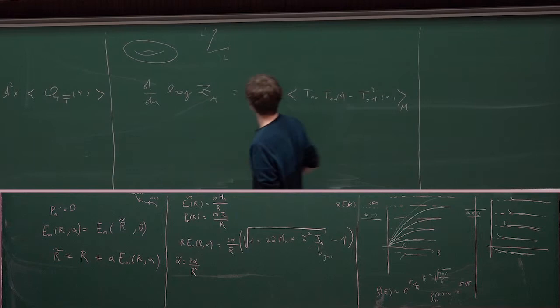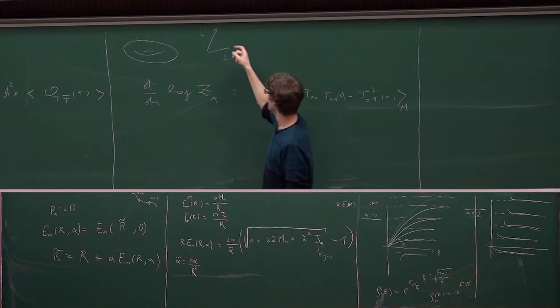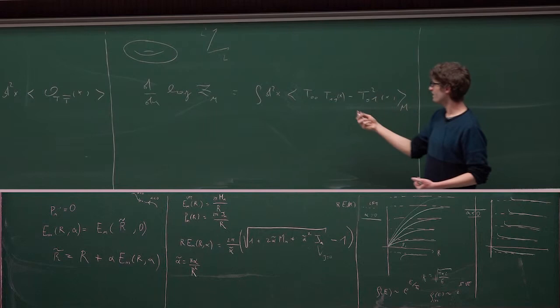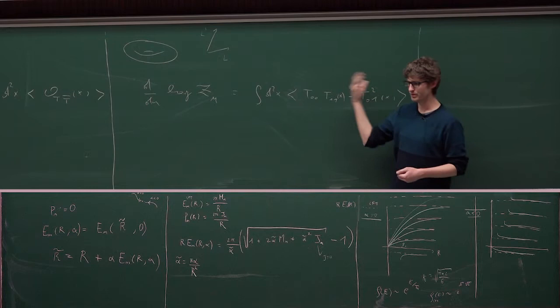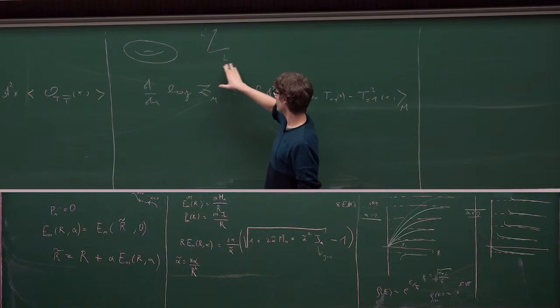The idea is essentially that... Well, we need to use the interpretation of the stress-energy tensor as generating some deformations of the metric. So, we have to consider the torus with some metric. So, now, the size of the torus is important. And, well, essentially, you rewrite this as some variations with respect to variations of the metric that are the same everywhere on the torus. It's just, essentially, a uniform change of coordinates.